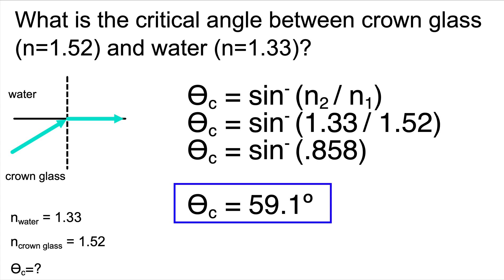Remember, this means if the incident angle was any larger than that, the light would reflect back into the material. So for example, if the angle of incidence was 59.2 degrees, the light would reflect back into the glass at an angle of reflection of 59.2 degrees. I hope this helped you out today.